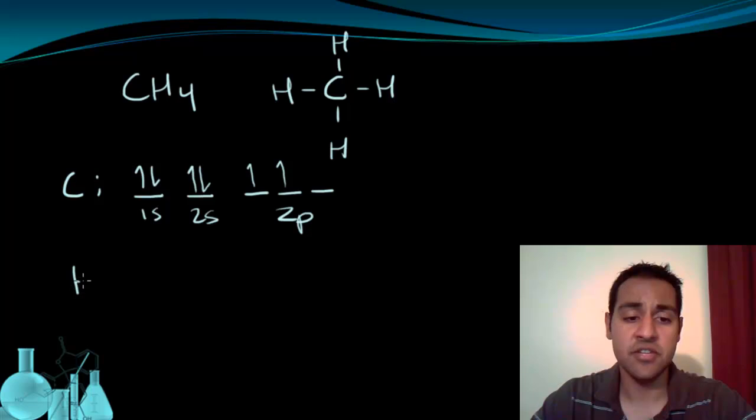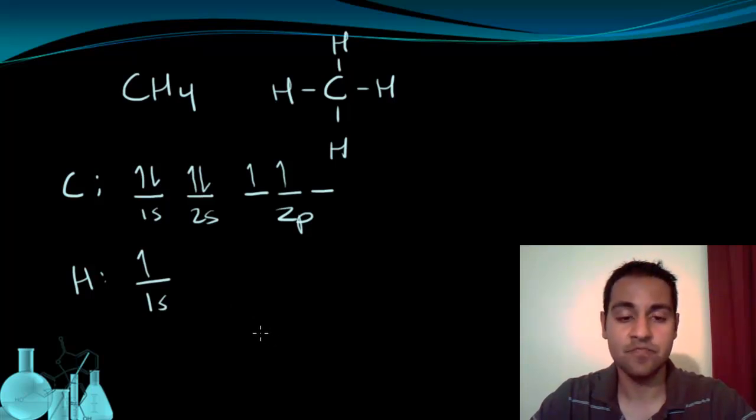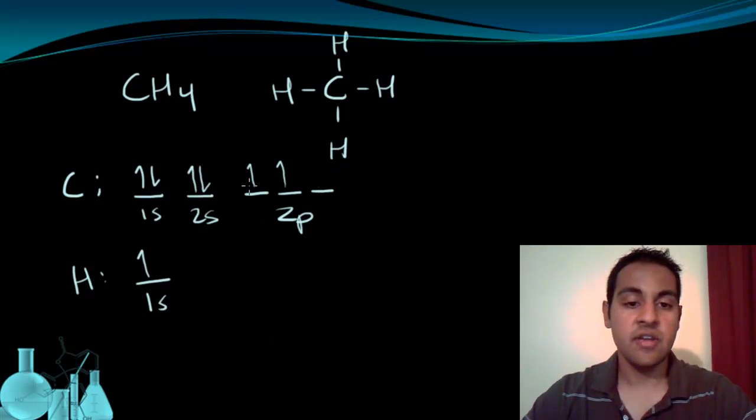Of course, each hydrogen in this molecule only has one electron, so each hydrogen has a single electron in the 1s sublevel. So with this configuration, how is carbon even going to bond four other atoms when it only has two electrons available for bonding?